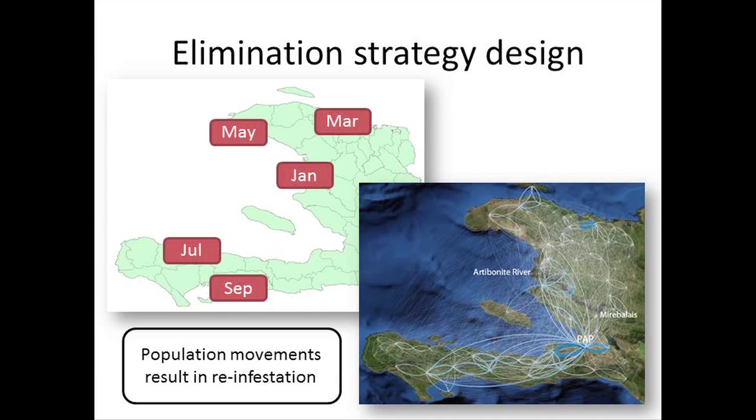For intervention study designs, some of the areas we're trying to compare to neighbors are highly connected to those neighbors, with huge amounts of movement to other parts of the region where transmission may be higher and parasites may be introduced, making it difficult to assess how effective those interventions are. For elimination strategy design, population movements result in reinfestation — there's an example from Haiti in the 1960s where parasites were cleared but reintroduced by population movements.